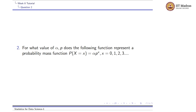Let us look at the second question. They are asking: for what value of alpha and p does the following function represent a probability mass function? p(x) = alpha * p^x for x equals 0, 1, 2, 3, and so on to infinity.